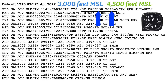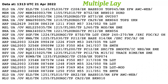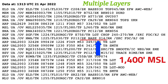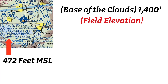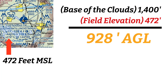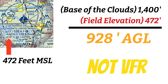You might see multiple layers reported or just the bases. In one example, cloud bases are at 1,400 feet MSL — the most important information for VFR pilots who need to know if they can legally fly. If the field elevation is 472 feet MSL and you subtract that from the cloud base, the ceiling is 928 feet AGL. Since KMWA is Class Delta, you're not going to be able to legally take off VFR from that field.